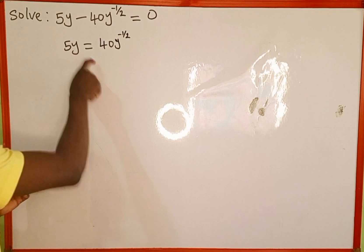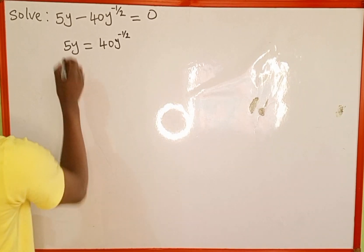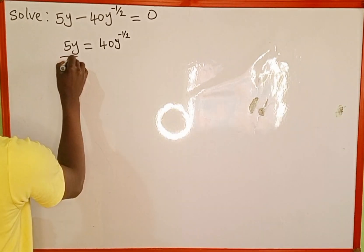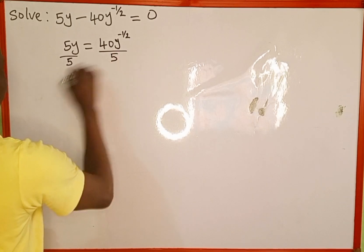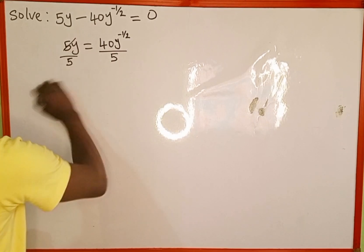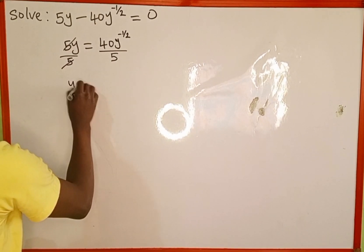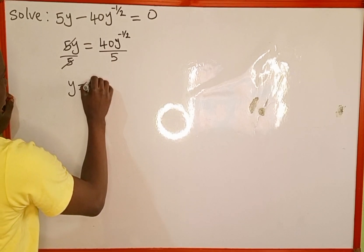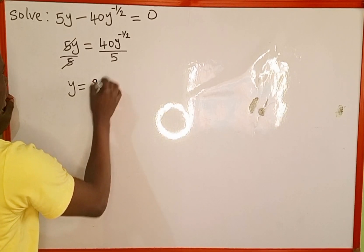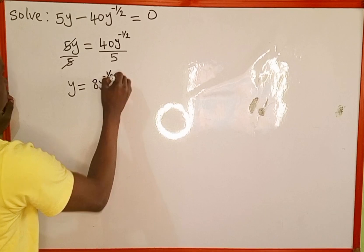The next thing we're going to do is to divide both sides of this equation by 5. So we divide the left hand side by 5 and also the right hand side by 5. This 5 is going to cancel this 5. Y will now be equal to 40 divided by 5, which is the same as 8, then y raised to the power of negative 1 over 2.